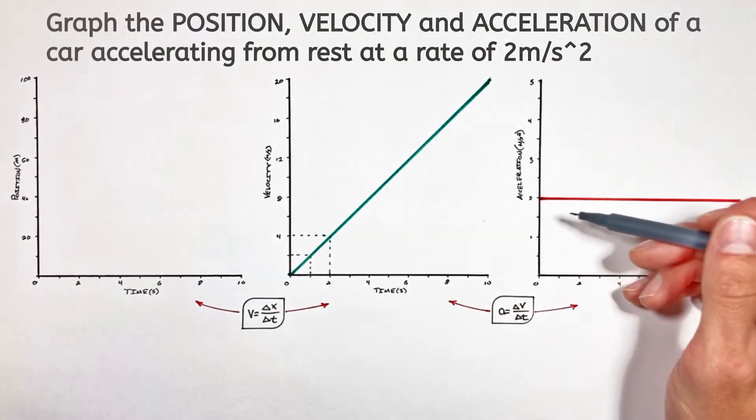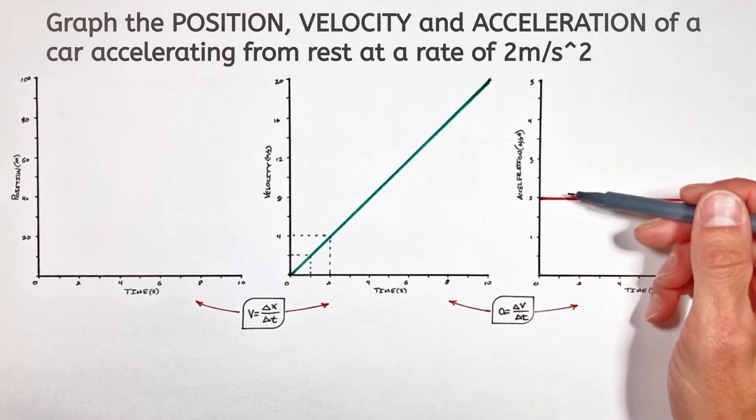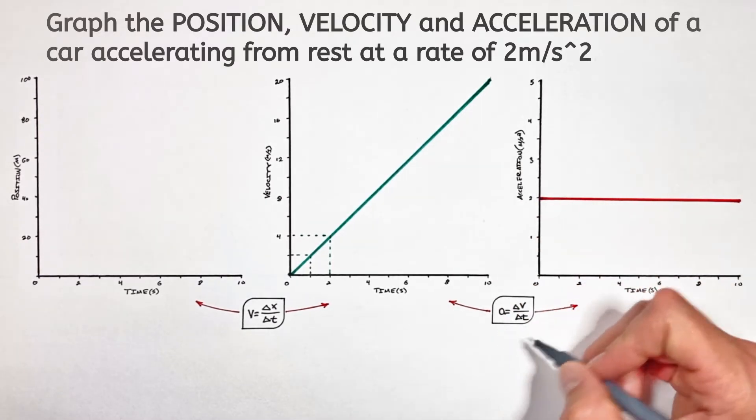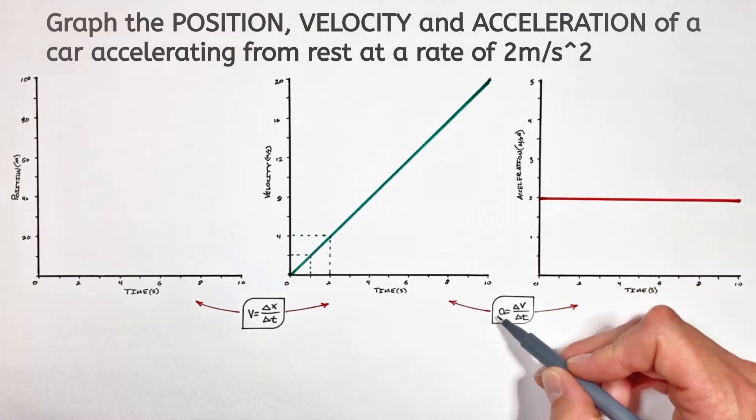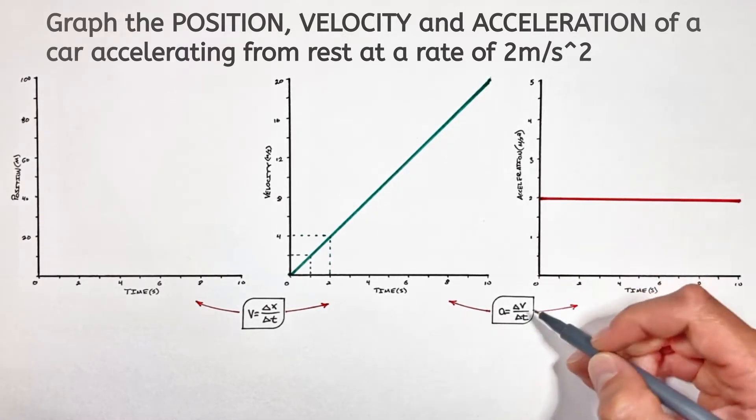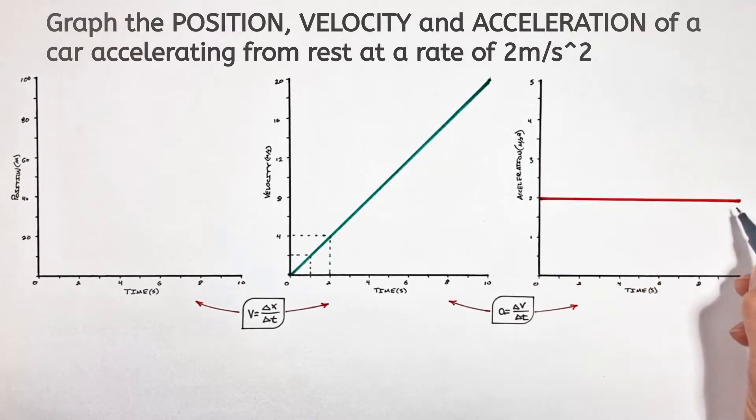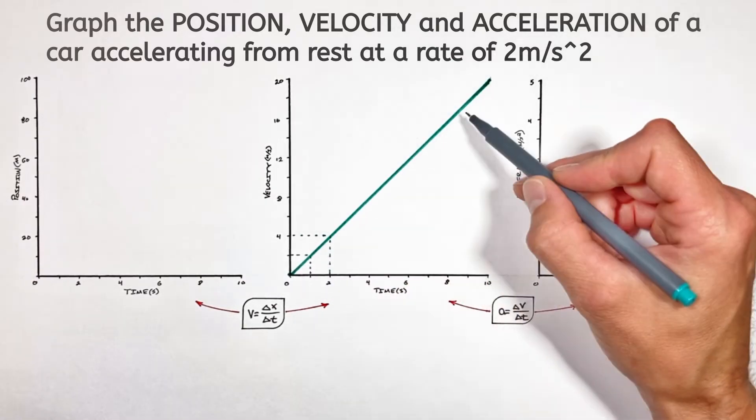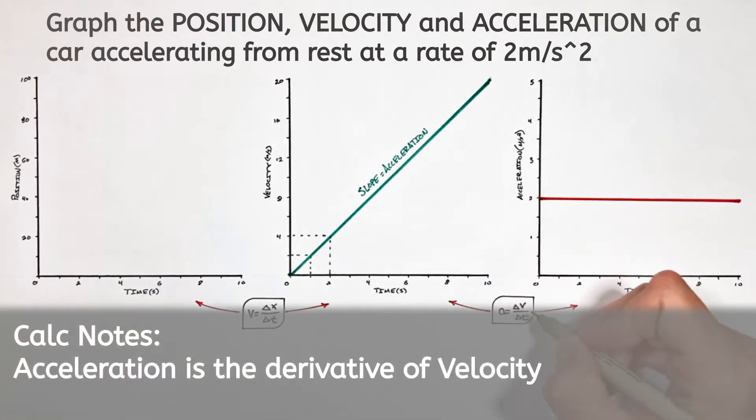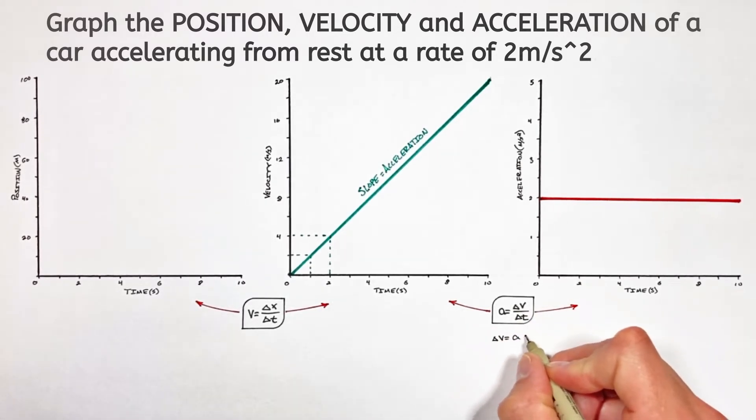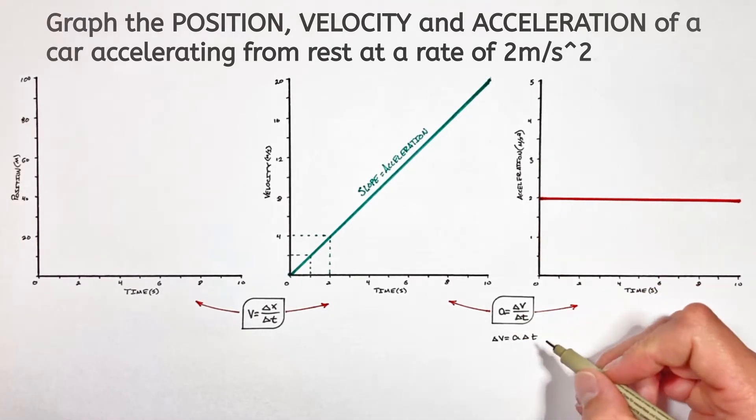Now there's a couple of really important key ideas regarding the relationship between these two graphs. This equation can be viewed as slope equals rise over run, ultimately meaning that the value of acceleration is equal to the slope of our velocity versus time graph. And rearranging this for velocity, we get the change in velocity equals acceleration multiplied by change in time.